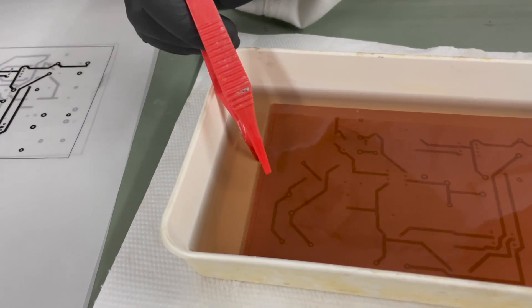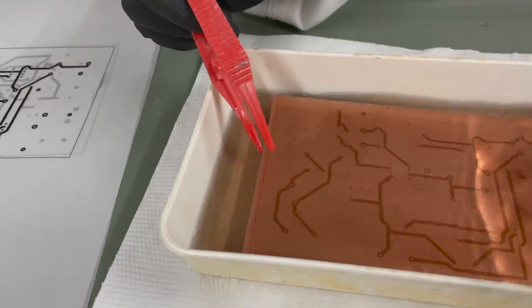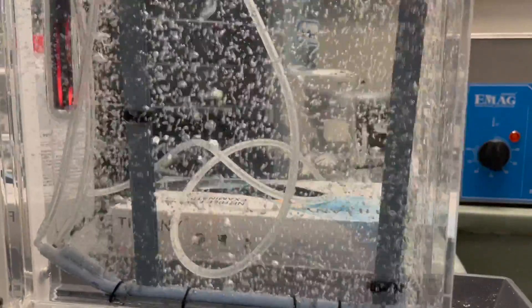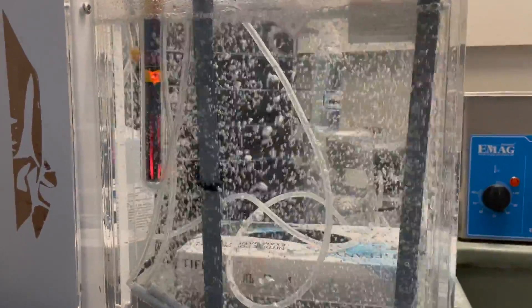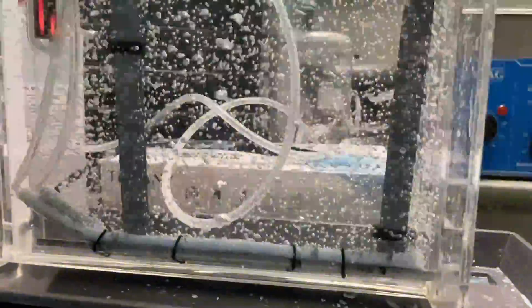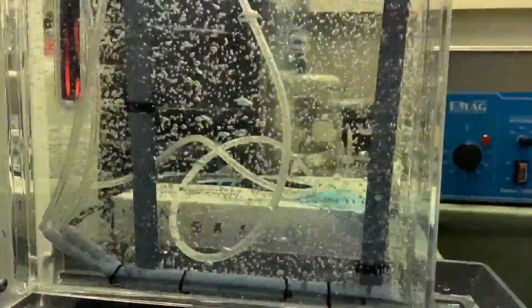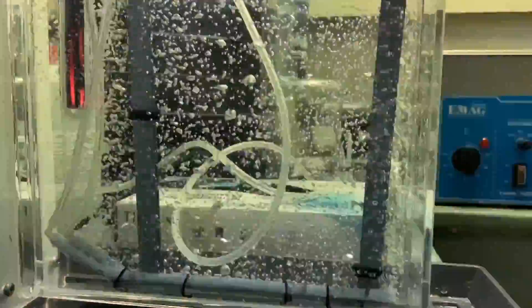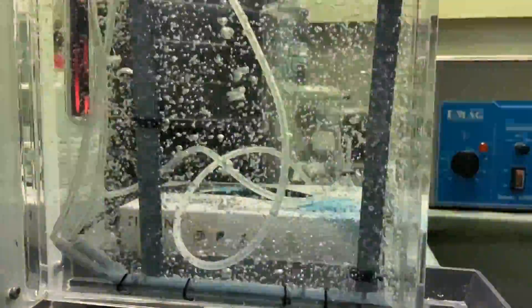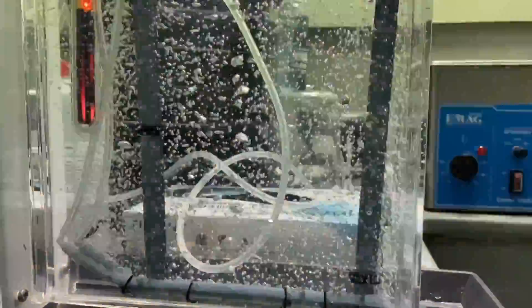To do this we're going to transfer our PCB into a cuvette which is basically a container for chemicals. Inside the cuvette we have a heating element which will heat up the liquid to around 45 degrees Celsius and we have a membrane to create small air bubbles which will move around all the liquid and distribute the heat smoothly as well as distribute the chemicals inside the liquid very smoothly around all the PCB.